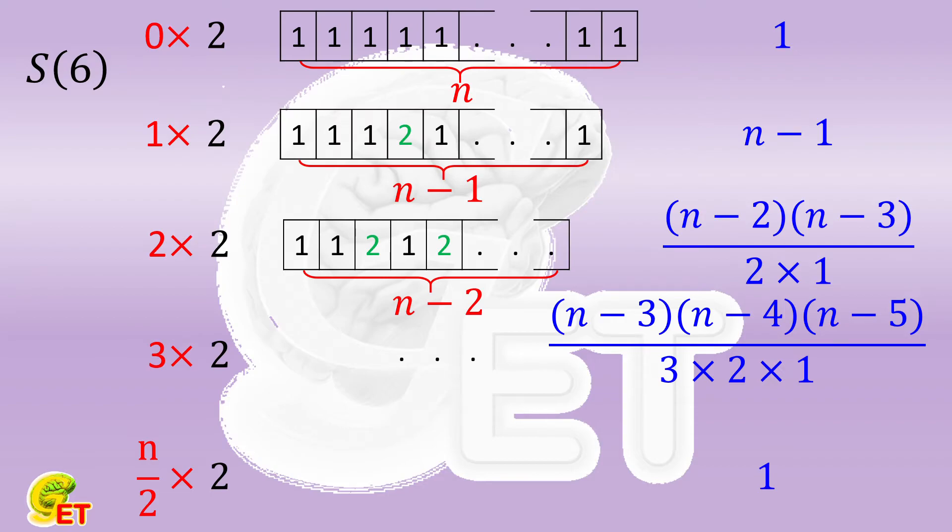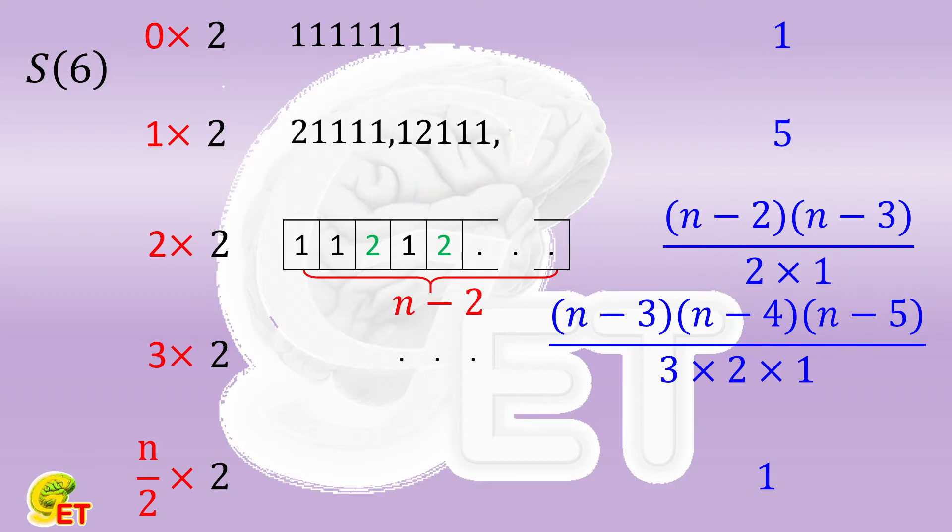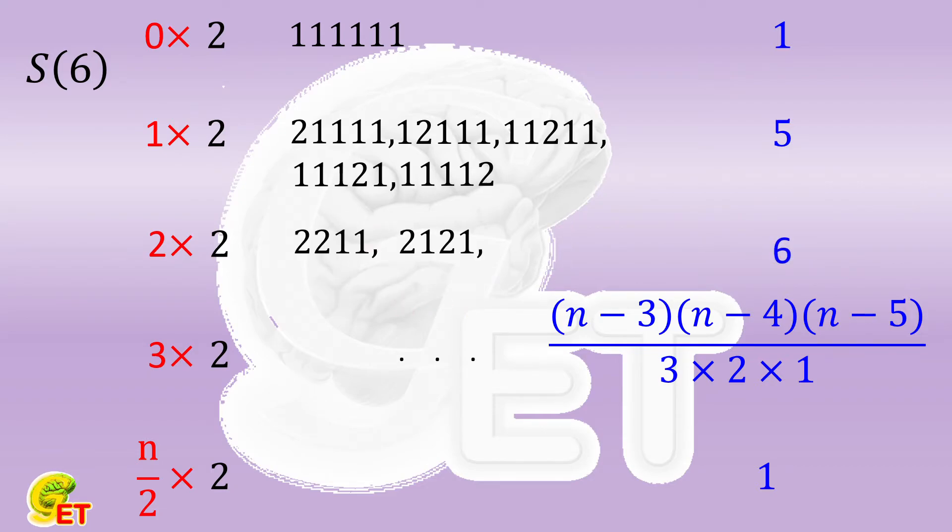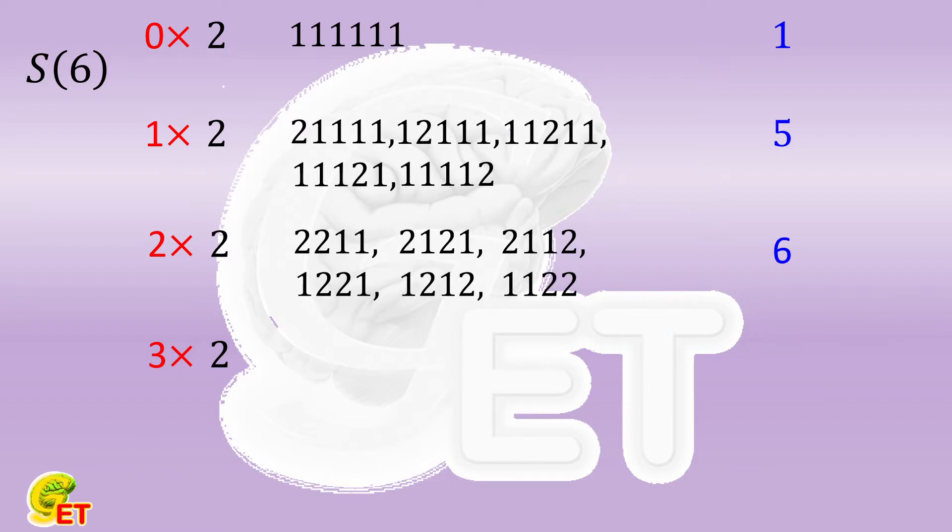If n is equal to 6, the first case still has 1 possibility, that is 111111. The second case has 5 possibilities: 21111, 12111, 11211, 11121, and 11112. The third case has 4 multiplied by 3 divided by 2 times 1, which equals 6 possibilities: 2211, 2121, 2112, 1221, 1212, and 1122. The fourth case still has 1 possibility, which is 222. So there are 13 possibilities in total.